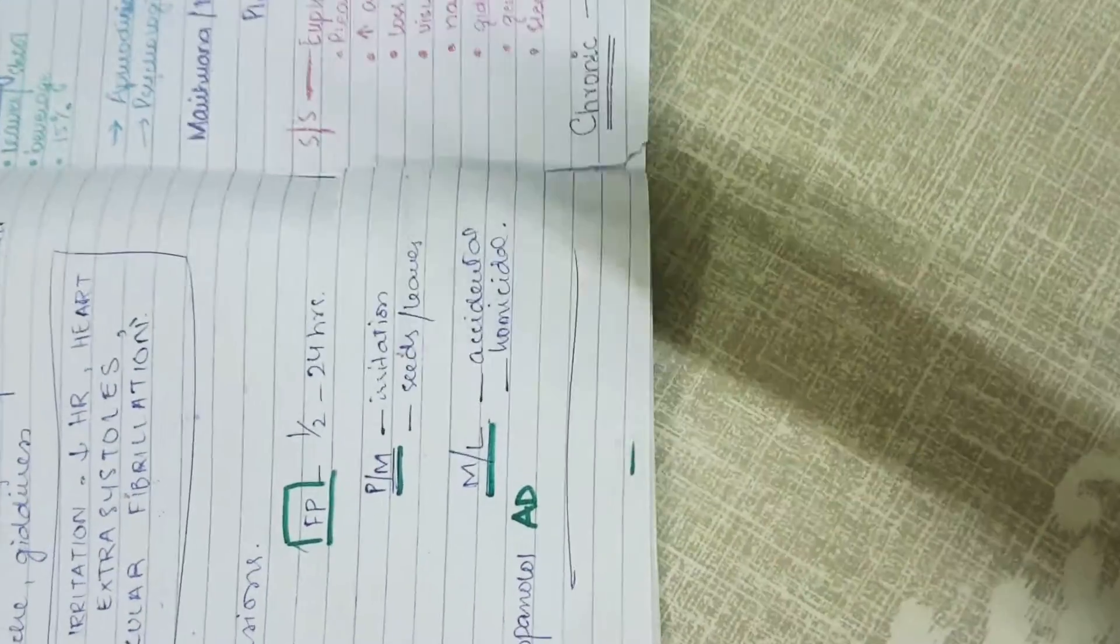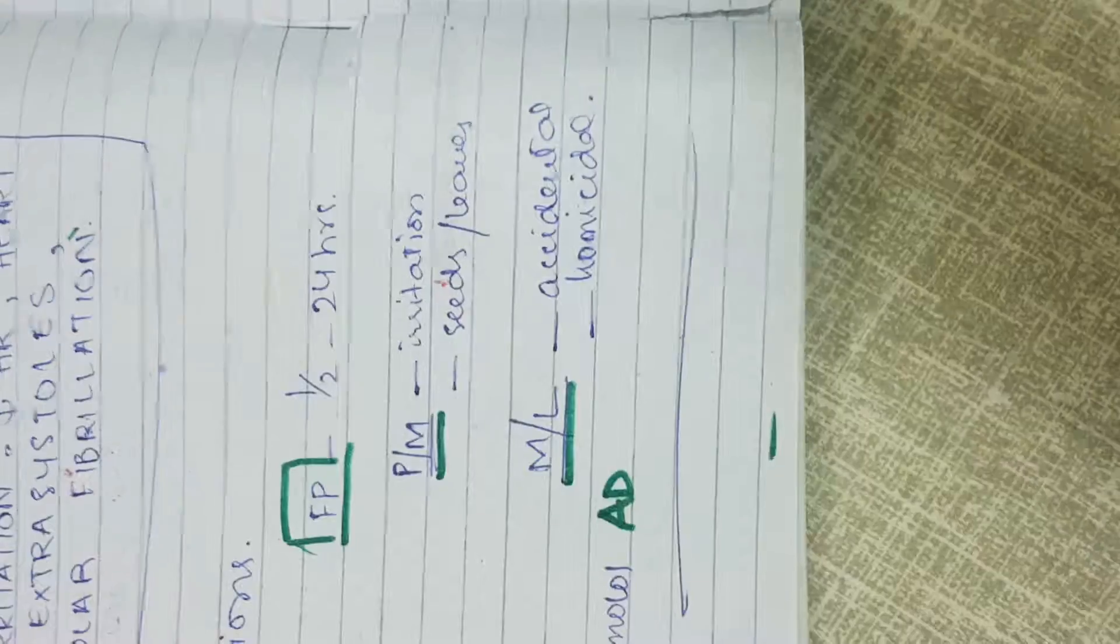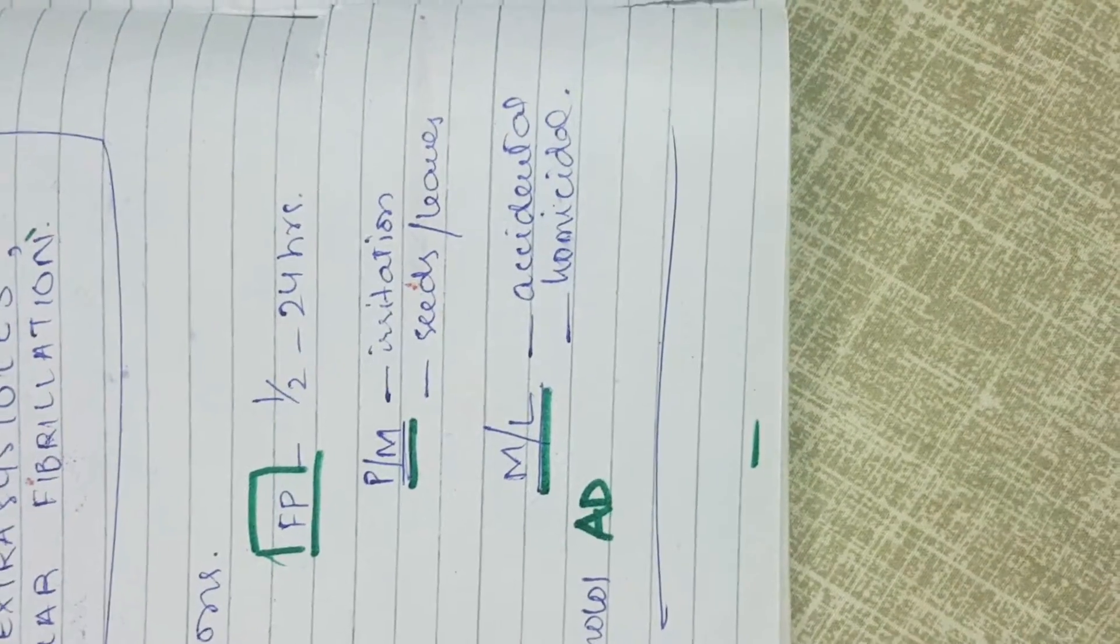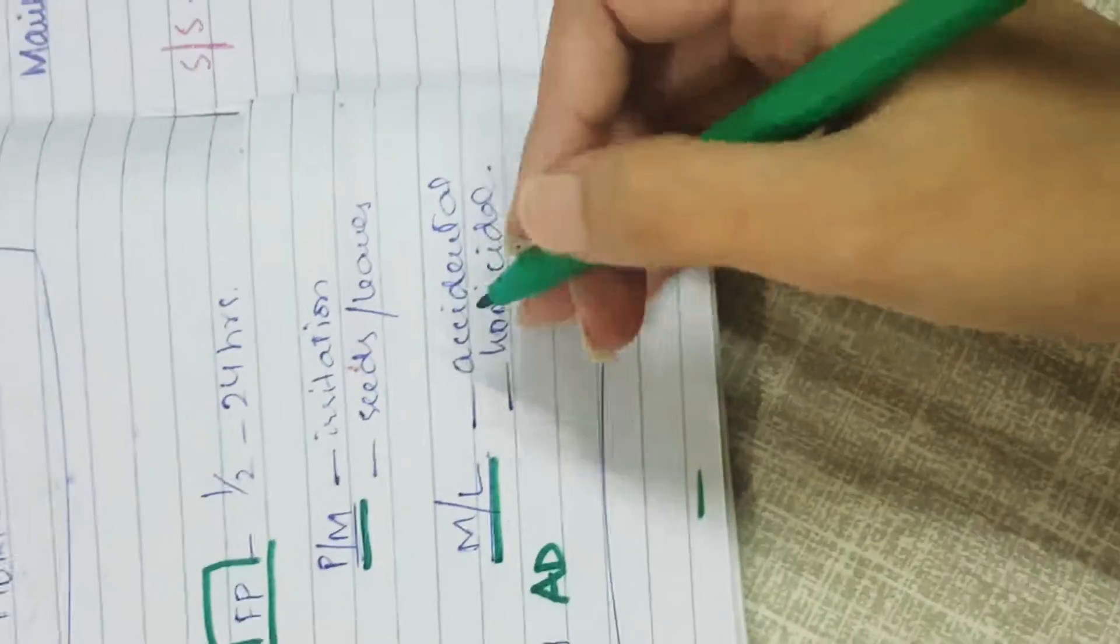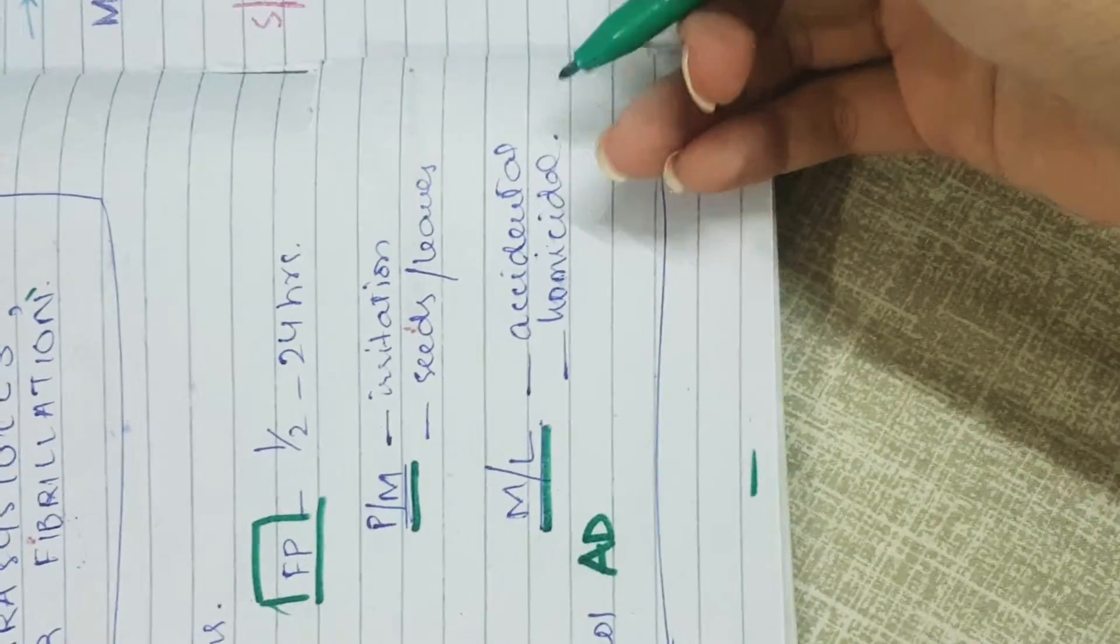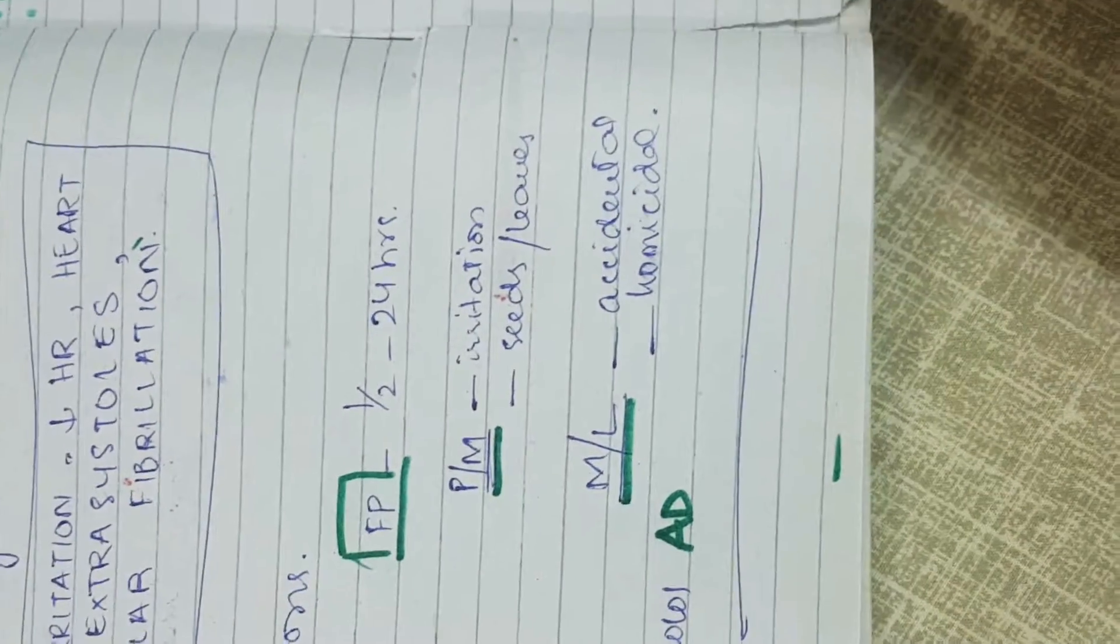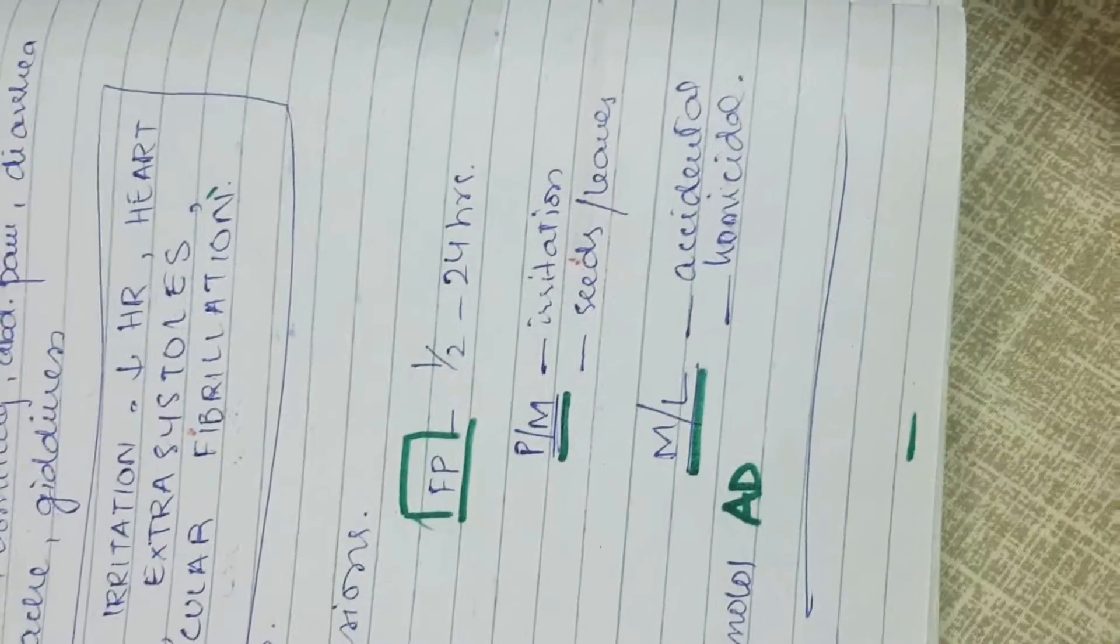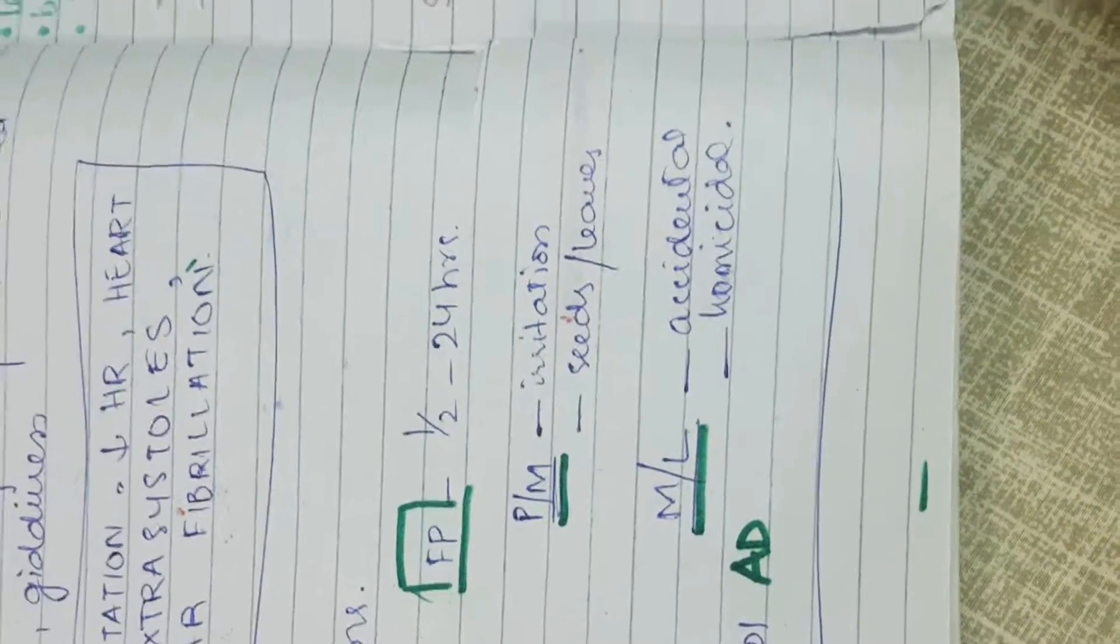The medical-legal significance is that it can be accidental from patient overdose or homicidal. It is particularly important in homicidal cases because it often cannot be found in the victim's body and may be considered as patient overdose.